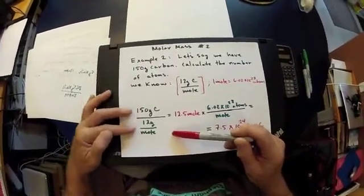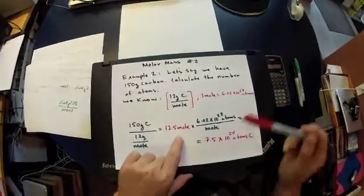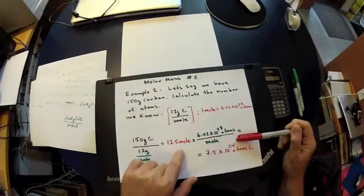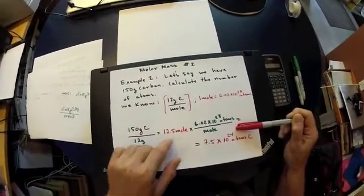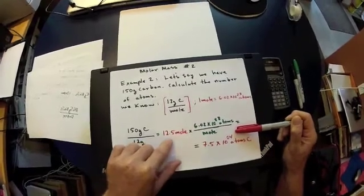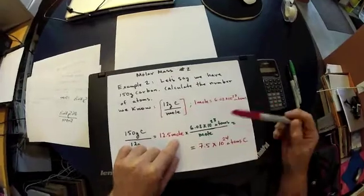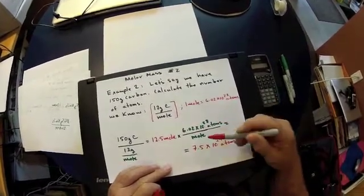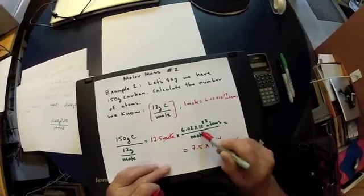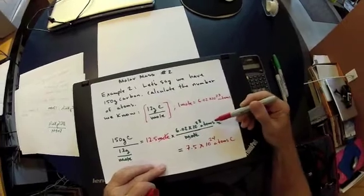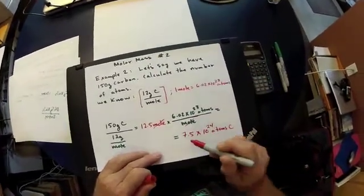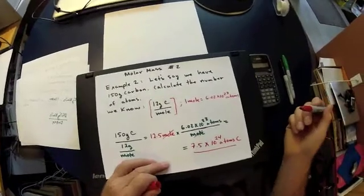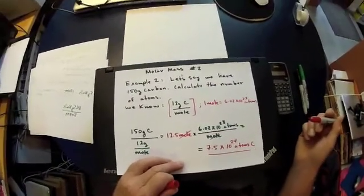150 grams of carbon divided by 12 grams per mole equals 12.5 moles. Now we have one more step: instead of dozens, we have moles. To find the number of atoms, we multiply 12.5 moles by Avogadro's number — 6 times 10 to the 23rd atoms per mole. The moles cancel, and we get 7.5 times 10 to the 24th atoms of carbon in 150 grams.